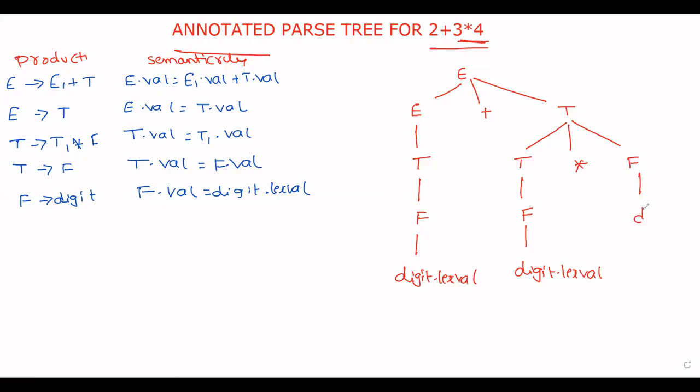Again F, and this one digit dot lex value. And this F, again digit dot lex value. This is the parse tree for the given expression.